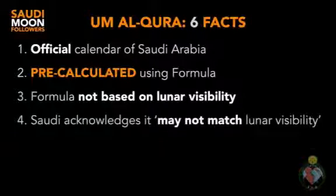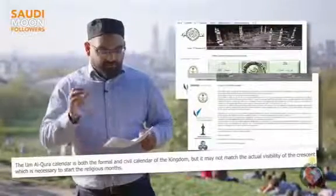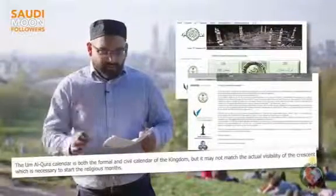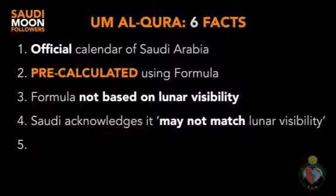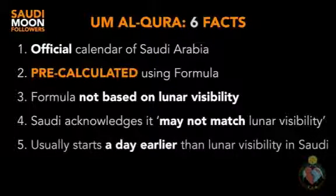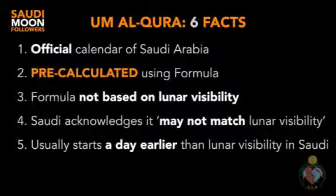The consequences of this are clearly acknowledged on the Umm al-Qurah official website, which states: 'The Umm al-Qurah calendar is both the formal and civil calendar of the kingdom, but it may not match the actual visibility of the crescent.' In fact, the formula the Umm al-Qurah calendar currently uses will result in months which, for most cases, start a day earlier than the moon is actually visible in Saudi Arabia.